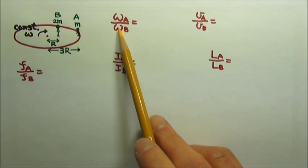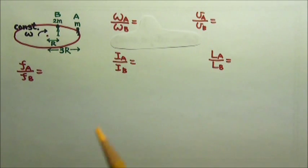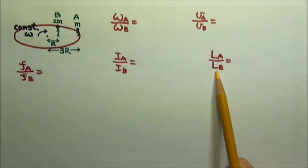ratios A to B for angular velocity, speed, frequency, rotational inertia, and angular momentum.